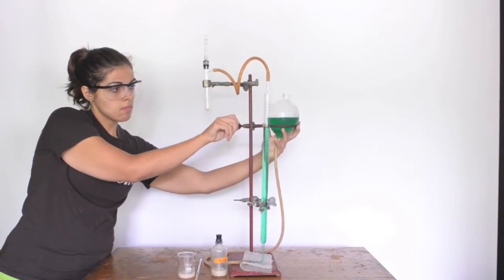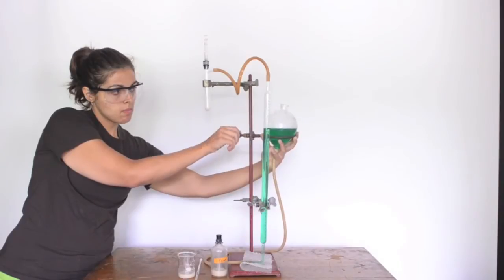Each time the water level decreases in the burette about 10 milliliters, you should lower the leveling bulb to equal out the pressure.